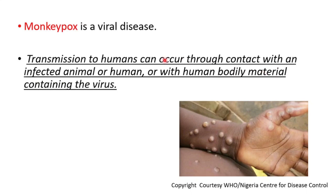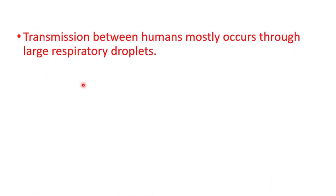Transmission to humans can occur through contact with an infected animal or human, or with human bodily material containing the virus. Transmission between humans mostly occurs through large respiratory droplets.